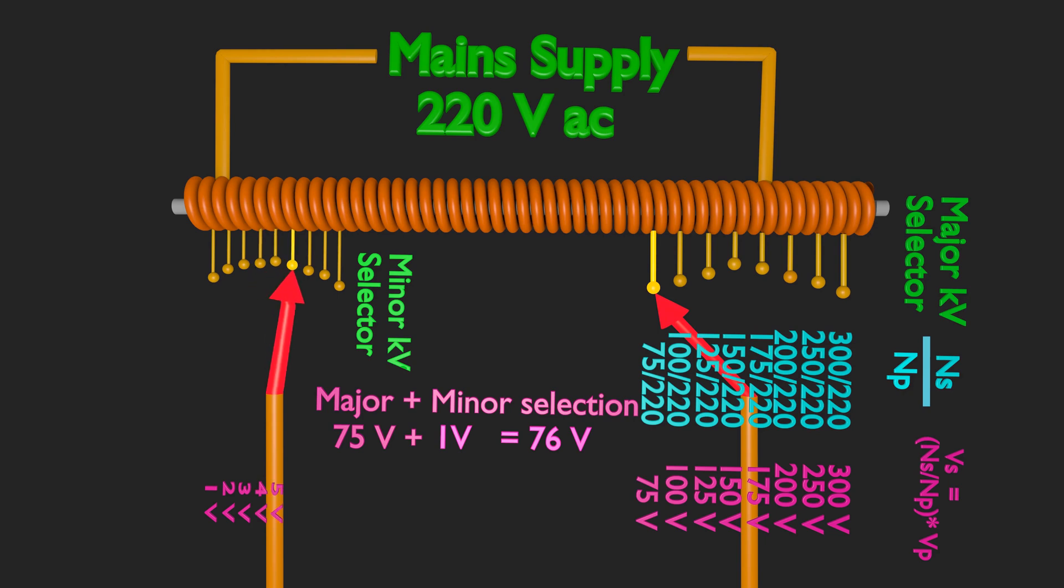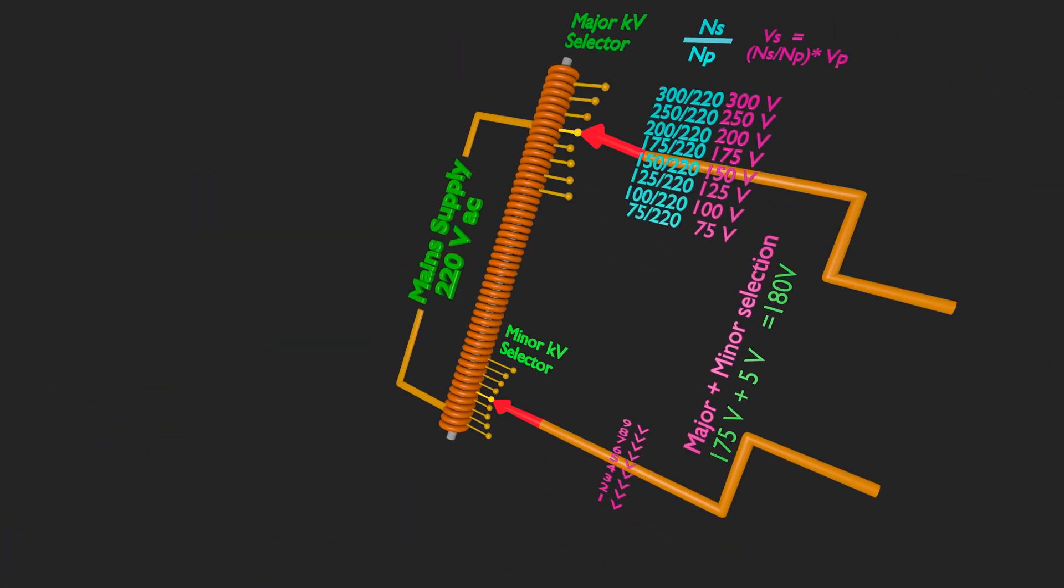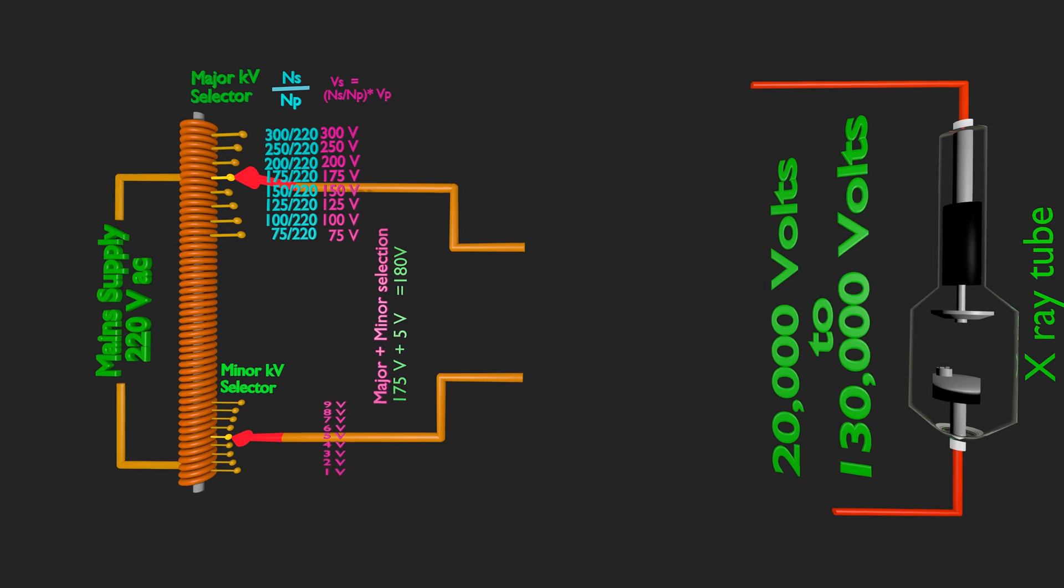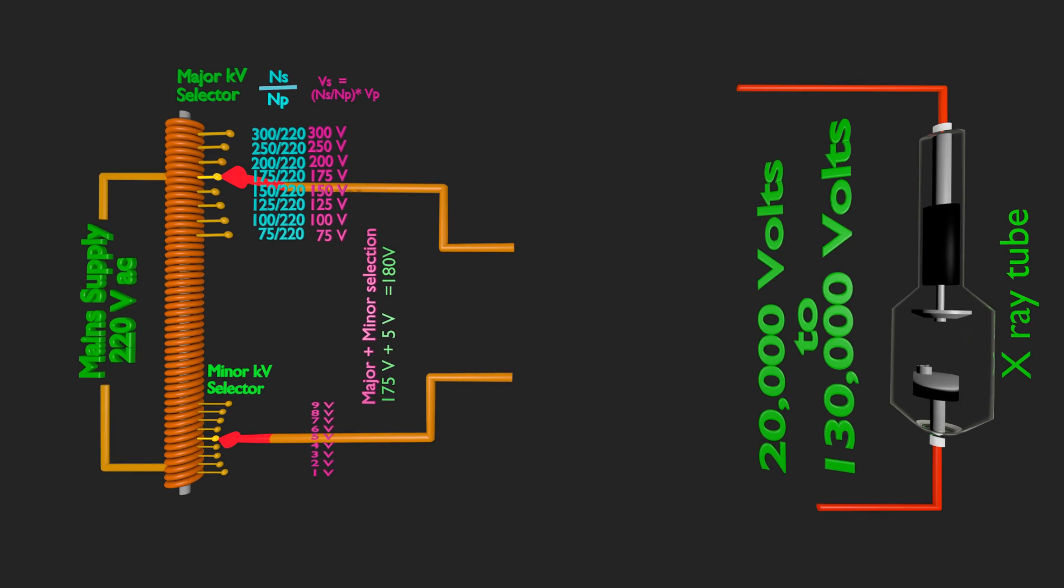As we shift from one tapping to other, voltages can be available at an increment of 1 volt. Let's fix our voltage across secondary at 180 volt, with 5 volt minor and 175 volt major tapping. This voltage of 180 volt has to be increased to kilovoltage range before applying to X-ray tube. This transformation is achieved by a step-up transformer.